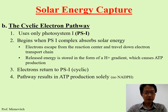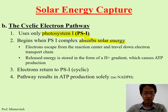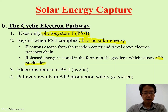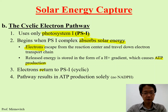In the cyclic pathway, photosystem 1 absorbs a photon. Whenever a photosystem absorbs light, an electron becomes energized. But in the cyclic pathway, the energized electron from photosystem 1 does not transfer to photosystem 2 — instead, it returns back to photosystem 1. That's why it is called cyclic. The high-energy electron goes back to photosystem 1 and is used to make ATP.